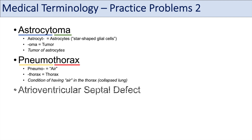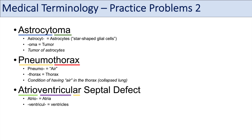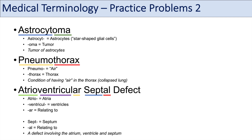The last term is atrioventricular septal defect. The prefix atrio means atria, ventriculo means ventricles, and the suffix -ar means relating to — so that first word means relating to the atria and ventricles. Breaking down septal: sept means septum, the separation of the right and left sides of the heart, and the suffix -al means relating to. An atrioventricular septal defect is a defect — often genetic or inherited — involving the atrium, ventricle, and septum of the heart.